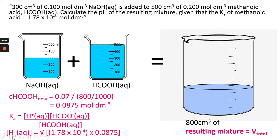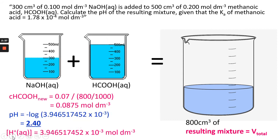So therefore, you multiply the two together and you square root to get H plus, which gives us 3.94651745 times 10 to the minus 3. That can go into the pH calculation, minus log of H plus concentration, which gives us 2.40.